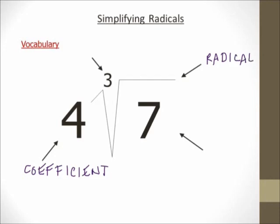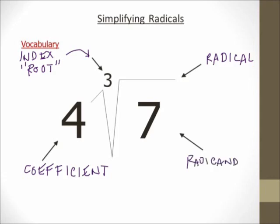Because I can have things other than a square root. Like in this case, this is a cube root, and I know it's a cube root because of the 3. That little number that's written up there at the top of the radical, in the corner there, that's called the index. You'll also hear it referred to as a root. The index is kind of the technical term for it; root is another term you can use for it.